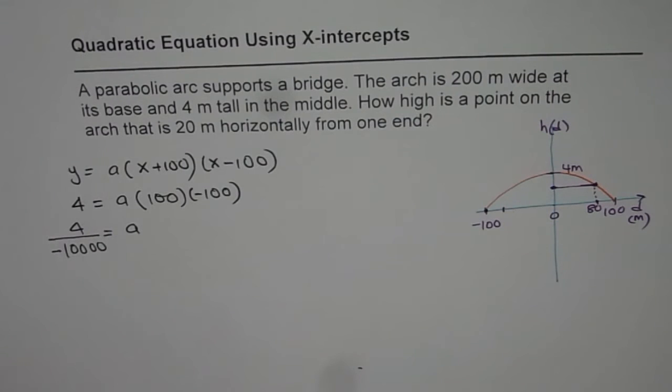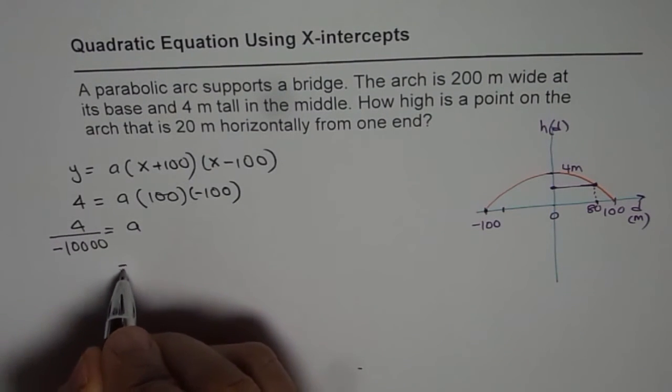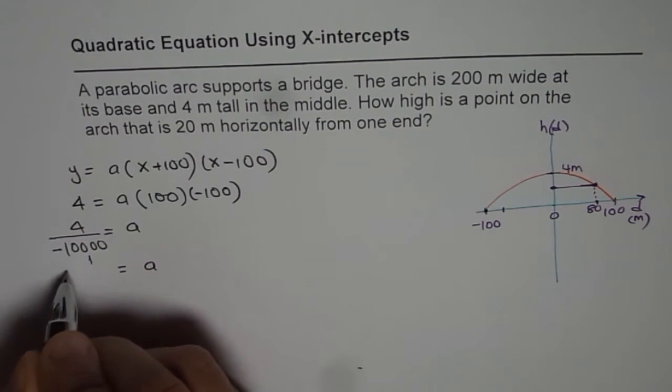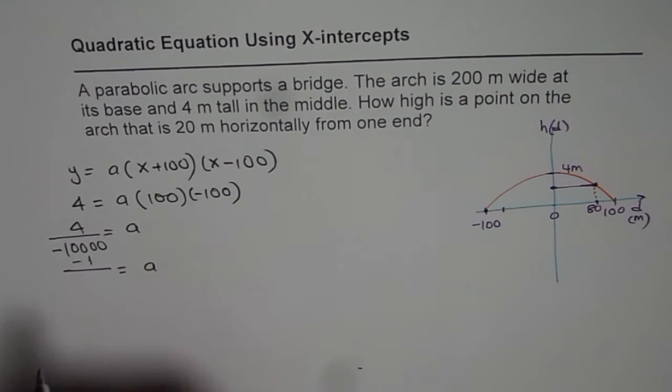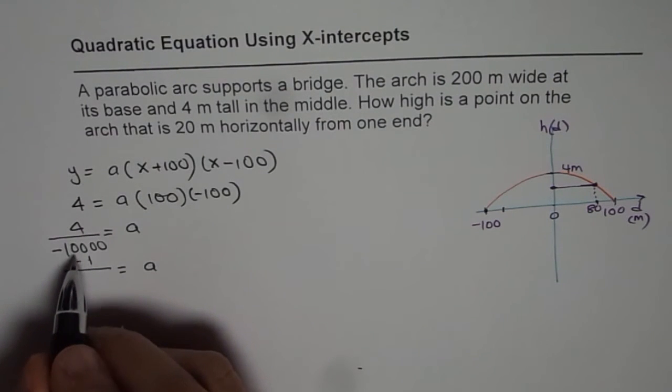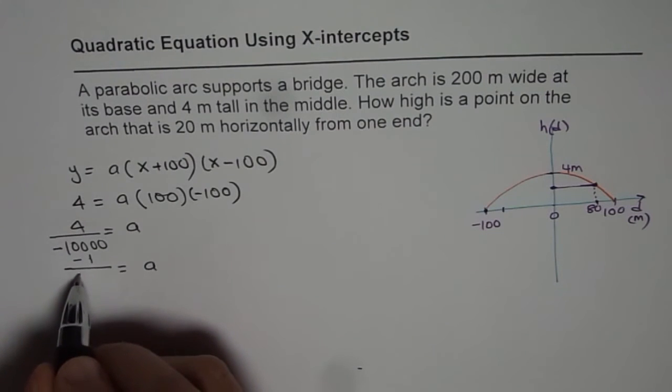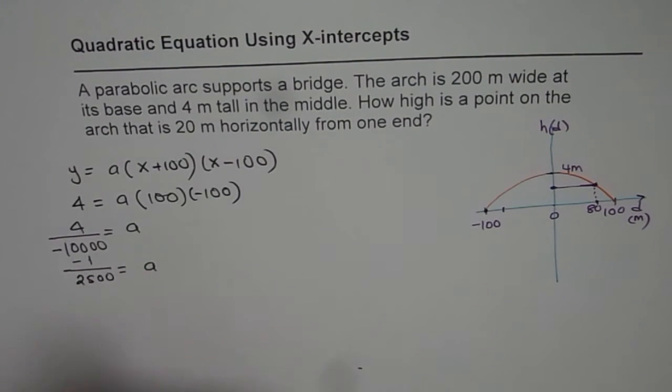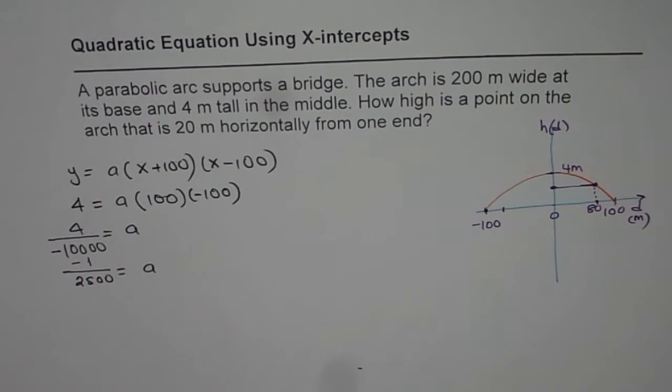So we get the value of a, which is a equals negative 1 over 2500. So that is the value of a for us.